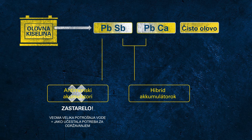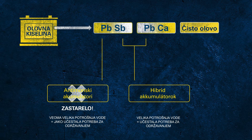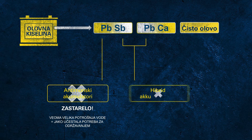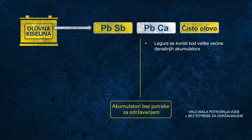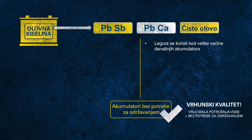Even these hybrid batteries had lower water loss compared to antimony batteries, but they still demanded regular checks of electrolyte and topping up with distilled water. Today, for all so-called maintenance-free batteries, lead calcium alloy is used for both the positive and negative grid. These batteries have very low water consumption, so under usual circumstances there is no more maintenance required, which is also a huge benefit for the end customer.